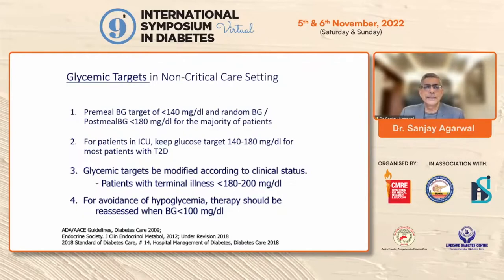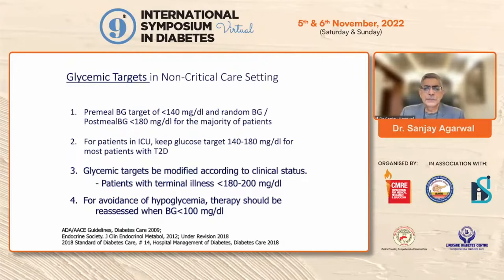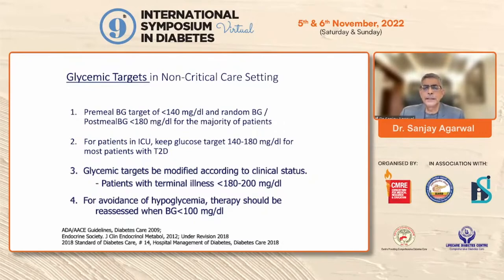In non-critical care settings, the pre-meal blood glucose target should be less than 180 mg/dL, and the random or post-meal glucose target should also be less than 180 mg/dL for the majority of patients. For ICU patients the target remains 140–180 mg/dL. Glycemic targets should be modified by clinical status: terminally ill patients can be kept at higher levels, and you should always avoid keeping patients below 100 mg/dL.